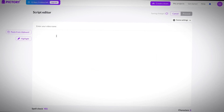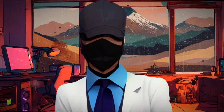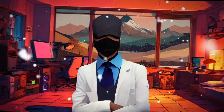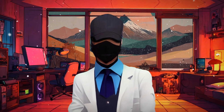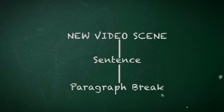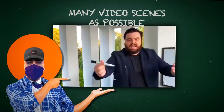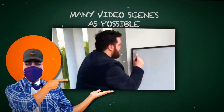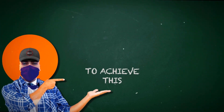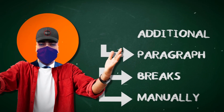Next, I pasted the script I copied earlier into this prompt box. After playing around with this website for a while, I figured out how to get the best possible results from it. Pictory adds a new video scene for every sentence and paragraph break in your script. To make things exciting and dynamic, you'd want your video to have as many video scenes as possible.